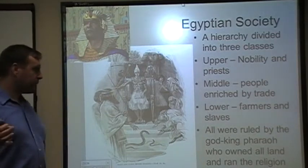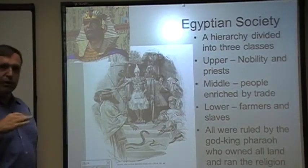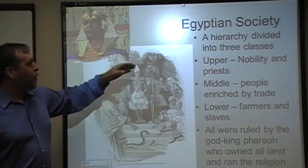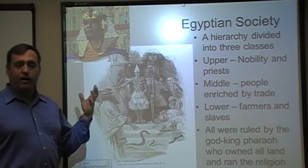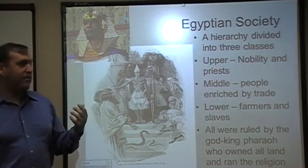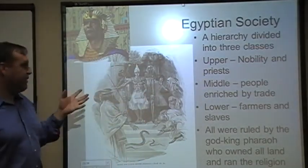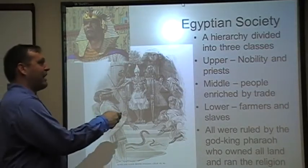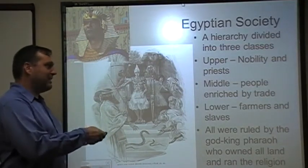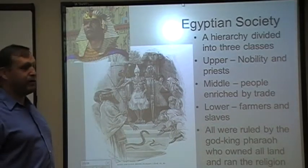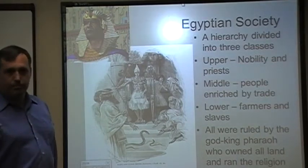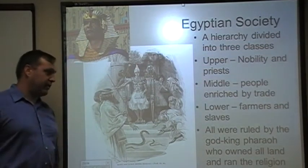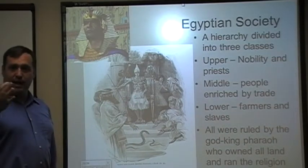Now what about Egyptian society? If we look at the overall course of history on a day-to-day basis, one of the things you'll see is a pretty strong and rigid hierarchy divided into three classes. One: you've got the upper class — the nobility — people related to the pharaoh and other noble families, but also the priestly class. Many priestly people come from the nobility, so the upper class is pretty well set. Two: you've got a pretty small middle group — people enriched by trade, merchants, warehouse people, business types. Three: for the most part the overwhelming majority of the people are going to be lower — farmers and slaves. All of these guys were ruled by this god-king that would eventually be known by the title pharaoh.